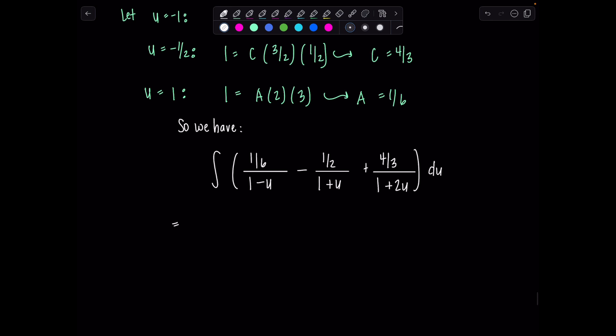Okay, we're home free. So we've got 1 sixth ln absolute value, 1 minus u for the antiderivative. Since there's a minus sign in front of the u, I need a negative outside. I'm not going to do another substitution. Hopefully by now you can handle that. Minus 1 half ln absolute value, 1 plus u plus 4 thirds. I'm going to need a 1 half outside because of the 2 in front of the u. ln absolute value, 1 plus 2u plus c.